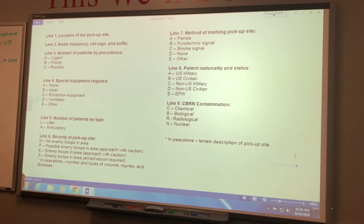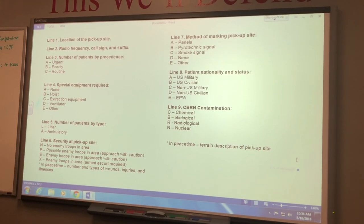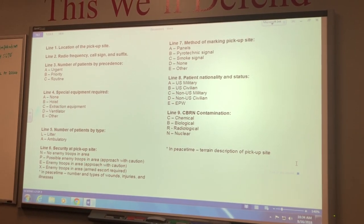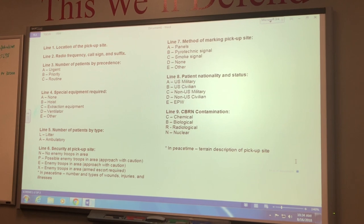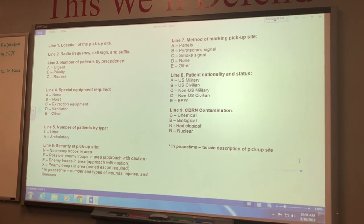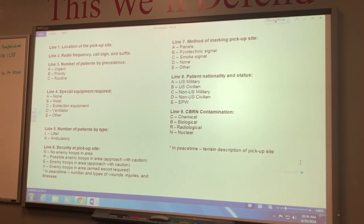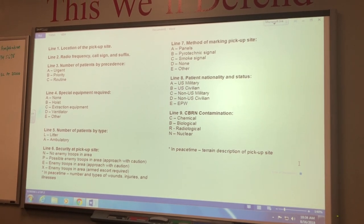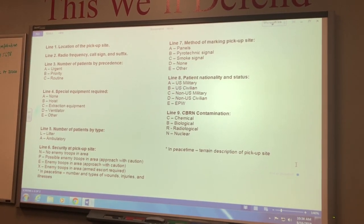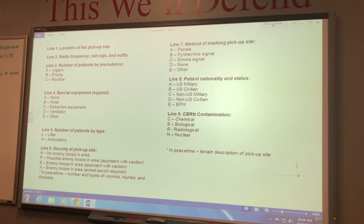Line eight is patient nationality and status. Alpha is US military, Bravo is US civilian, Charlie is non-US military like a civilian from that area, or Echo for enemy prisoner of war.